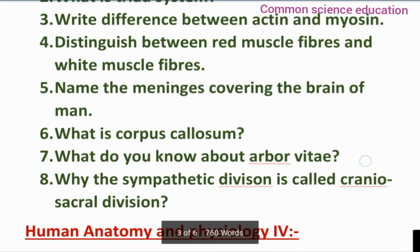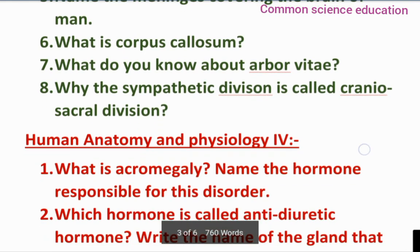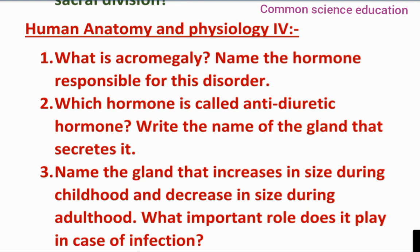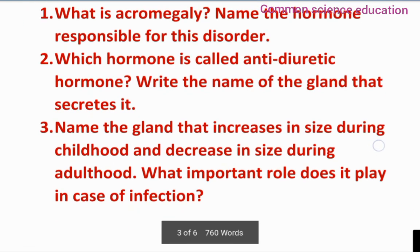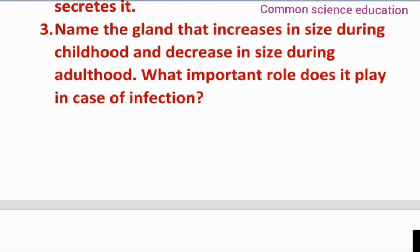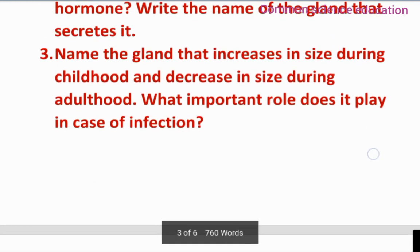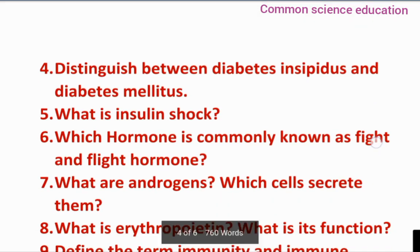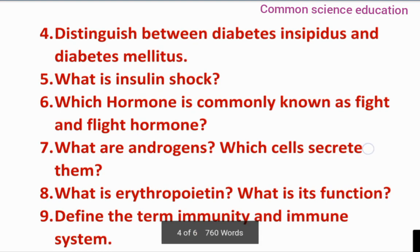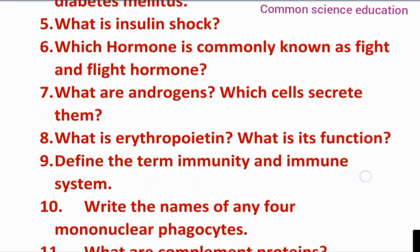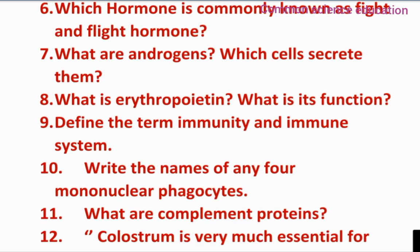Next, unit 4 important questions: What is acromegaly? Name the hormone responsible for the disorder. Which hormone is called anti-diuretic hormone? Write the name of the gland that secretes it. Name the gland that increases in size during childhood and decreases in size during adulthood. Distinguish between diabetes insipidus and diabetes mellitus. What is insulin shock? Which hormone is formerly known as the fight and flight hormone?